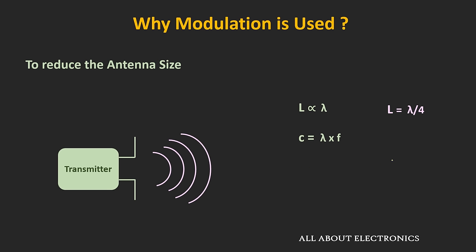On the other hand, if the signal is transmitted at 10 MHz, then the length of the antenna will be reduced by a factor of 1000. In that case, the length of the antenna will be equal to 7.5 meters, which is manageable. So that is one of the reasons for modulation.